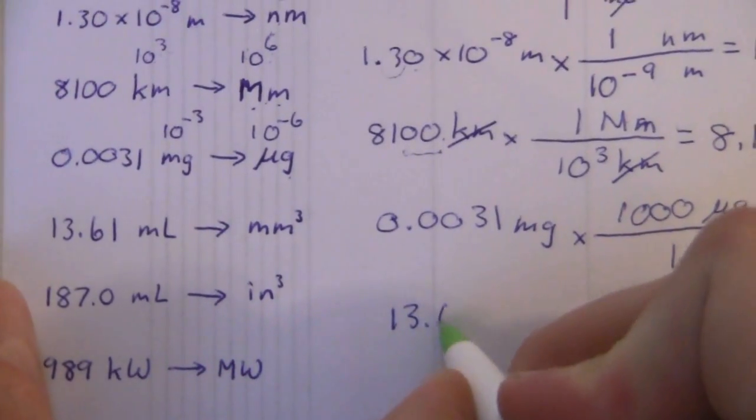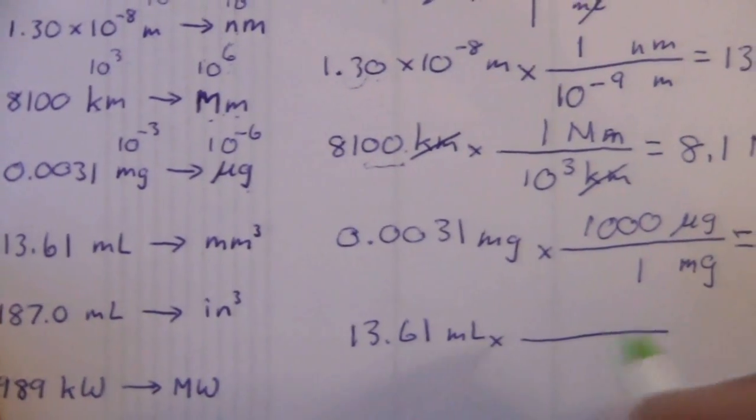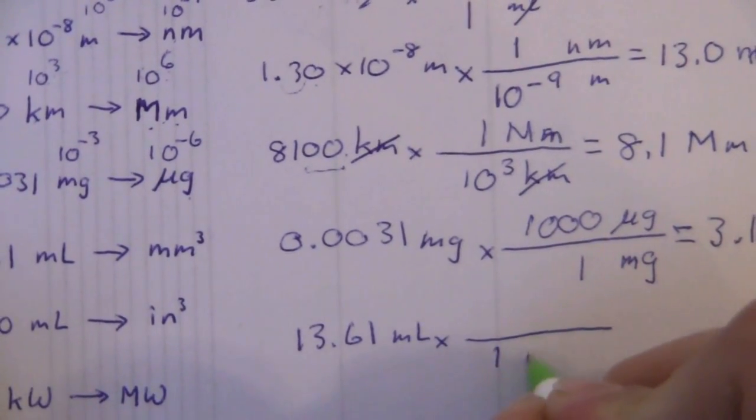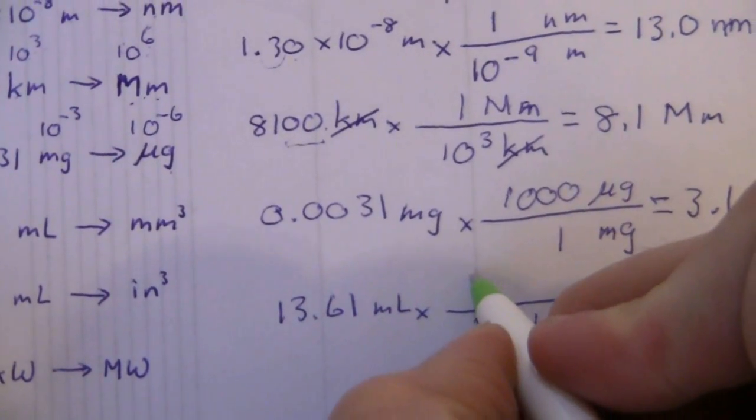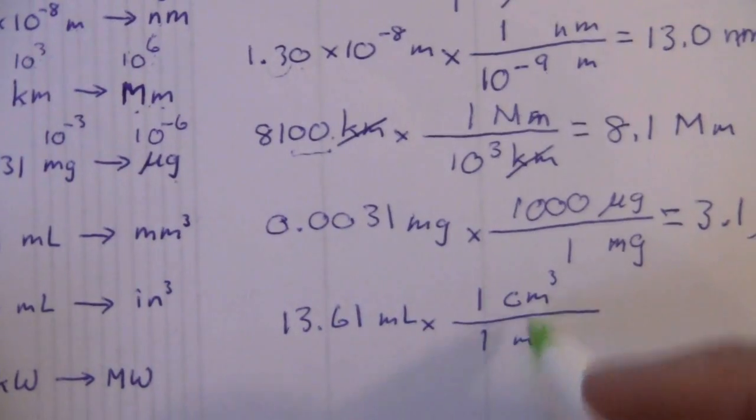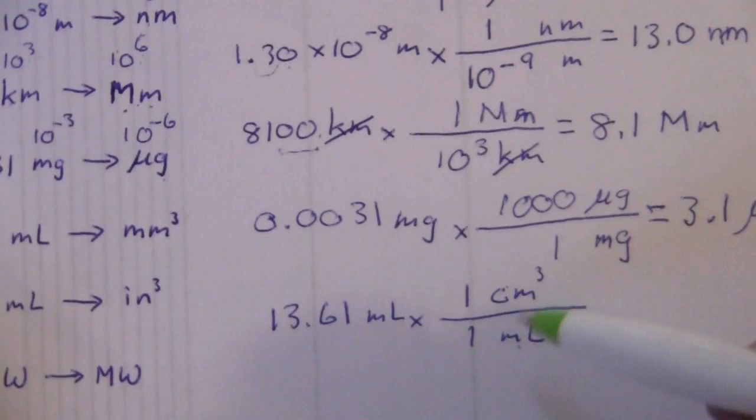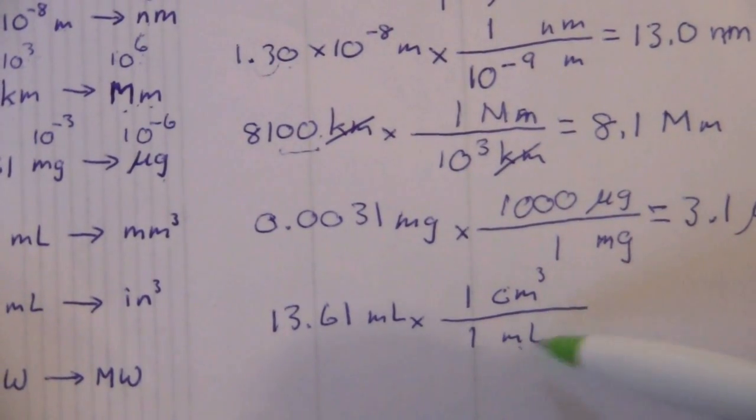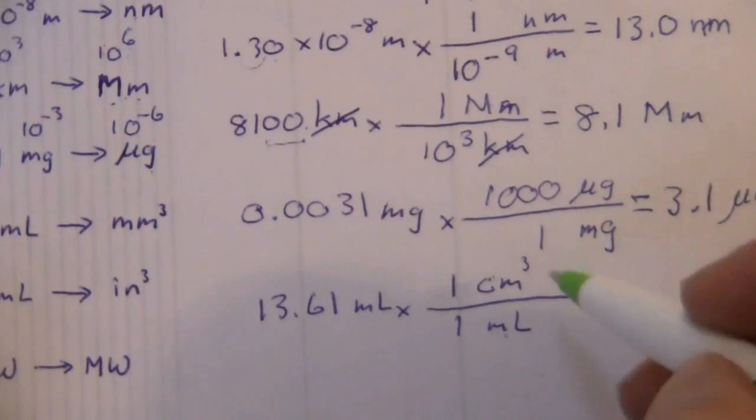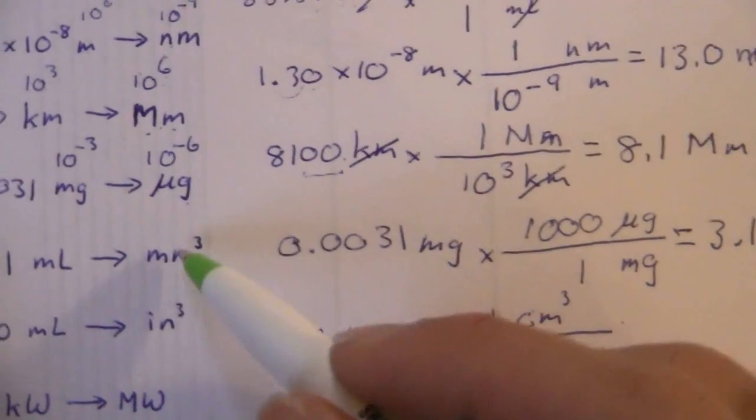13.61 milliliters. The first thing we need to recognize is that in one milliliter there is one cubic centimeter. This is something you need to remember, and that will allow you to go between volume units with liters to cubic length units.